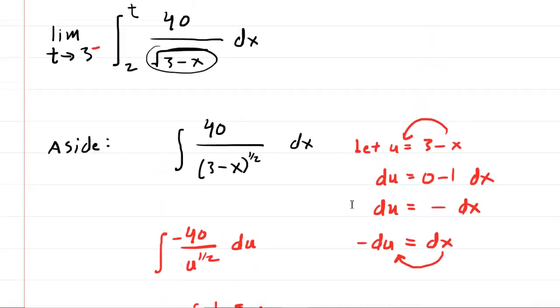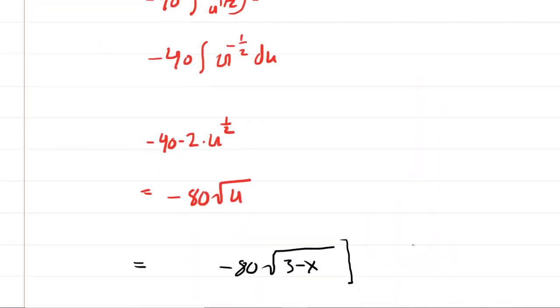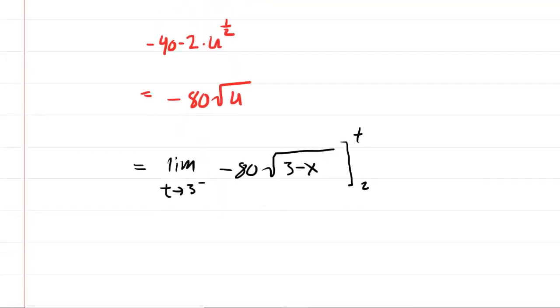Let's recall that the lower limit was 2 and the upper limit was t. And this was fine so long again as we take the limit as t approaches 3 from the left hand side of 3. So now we'll plug in the upper bound first. So we'll have negative 80 square root of 3 minus t minus negative 80. Well, minus negative 80 is just plus 80 square root of 3 minus 2. Don't forget you still are doing the limit as t approaches 3 from the left.